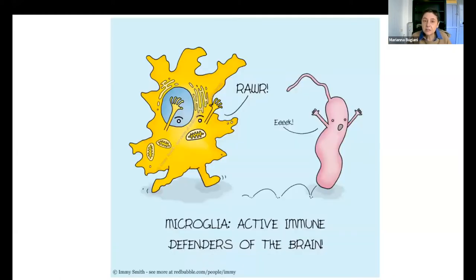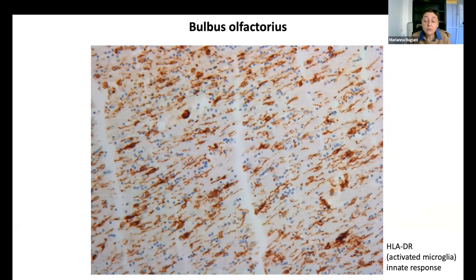Because it is an infectious disease, we looked at the innate and adaptive immunity to mostly try to figure out if this disease may represent a risk factor for accelerating neurodegeneration. When you look at innate immunity, the first cells you try to characterize are of course the microglia. Here you see the bulbous olfactoris of the brain stained with an antibody that highlights activated microglia. We saw that the density of microglia is largely increased, demonstrating a participation of the innate immune response.